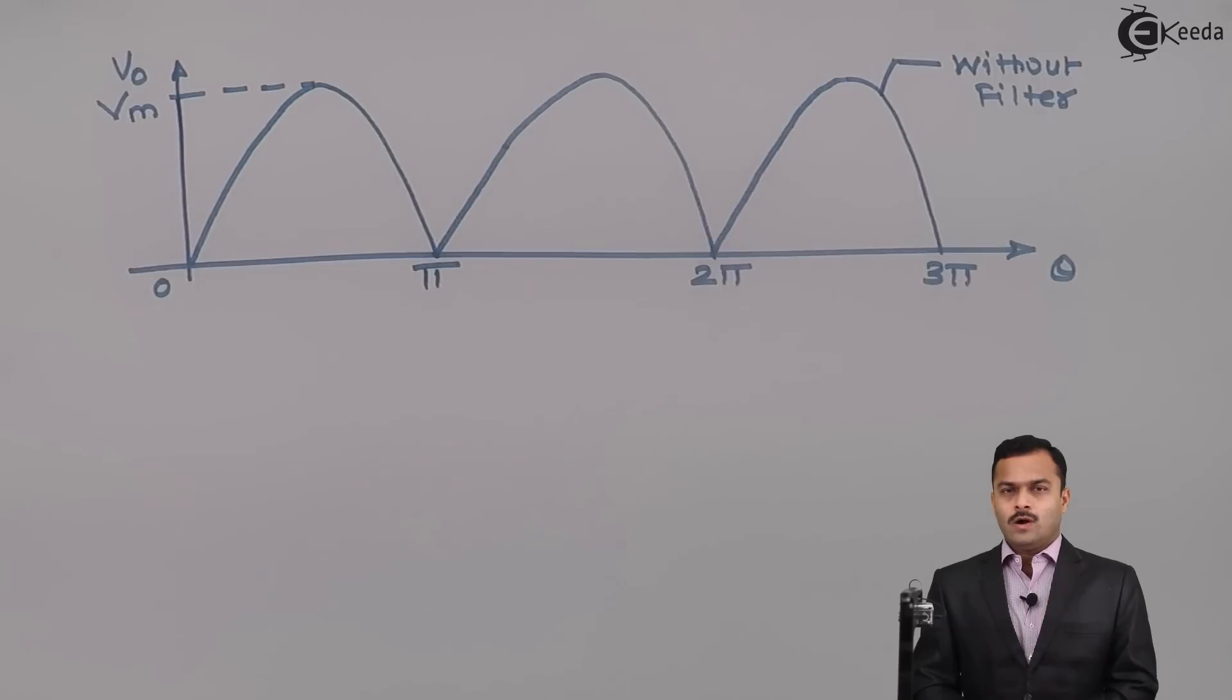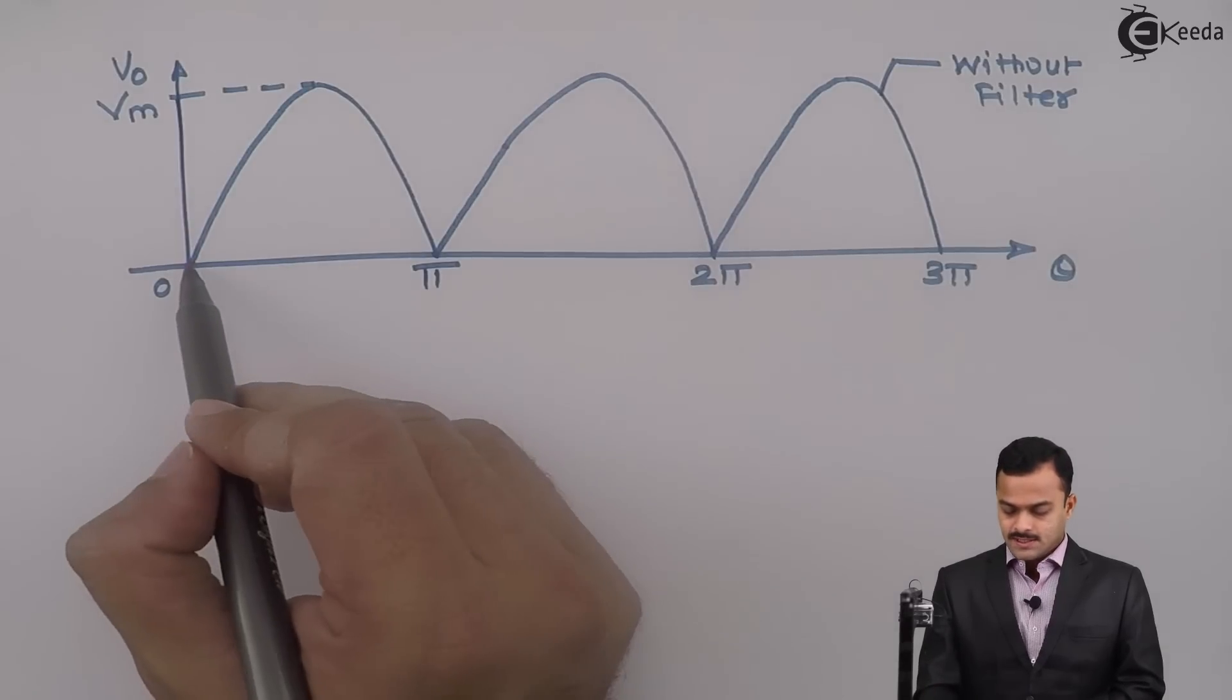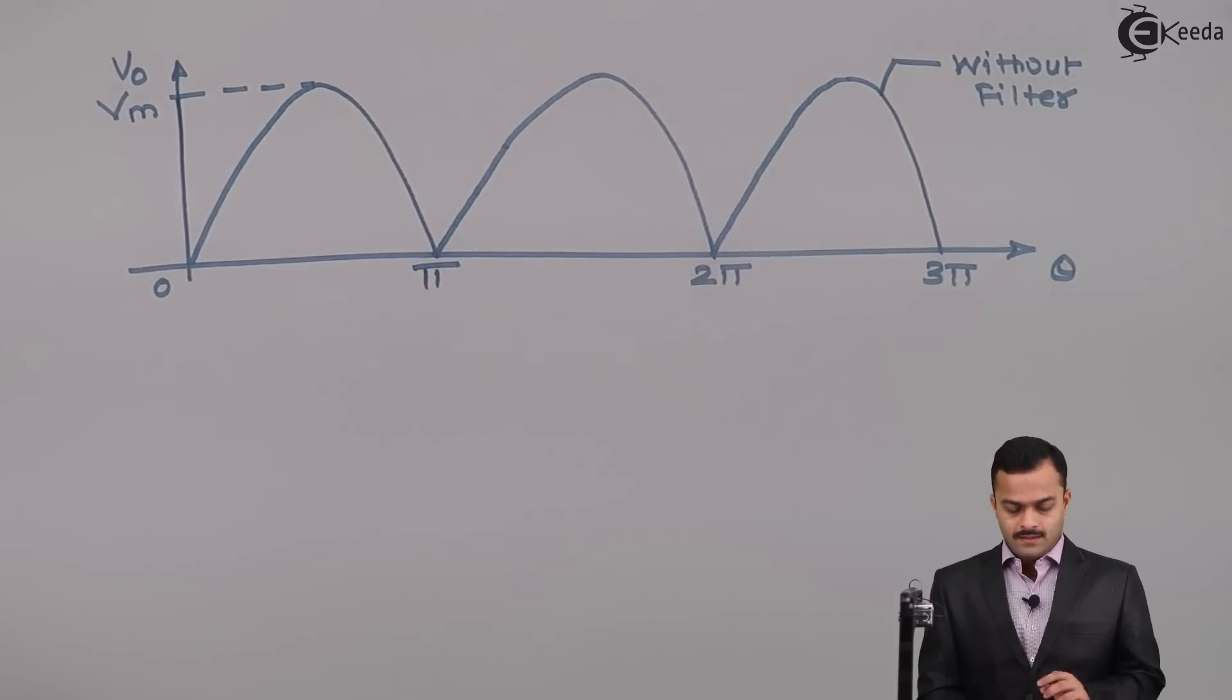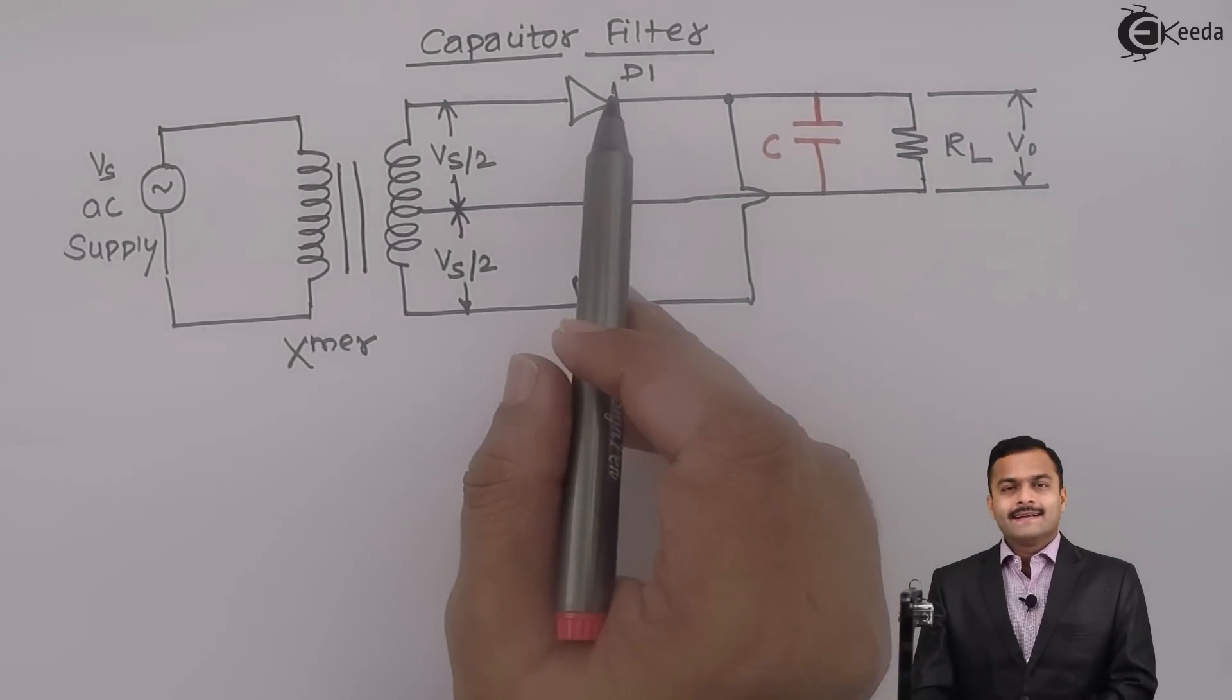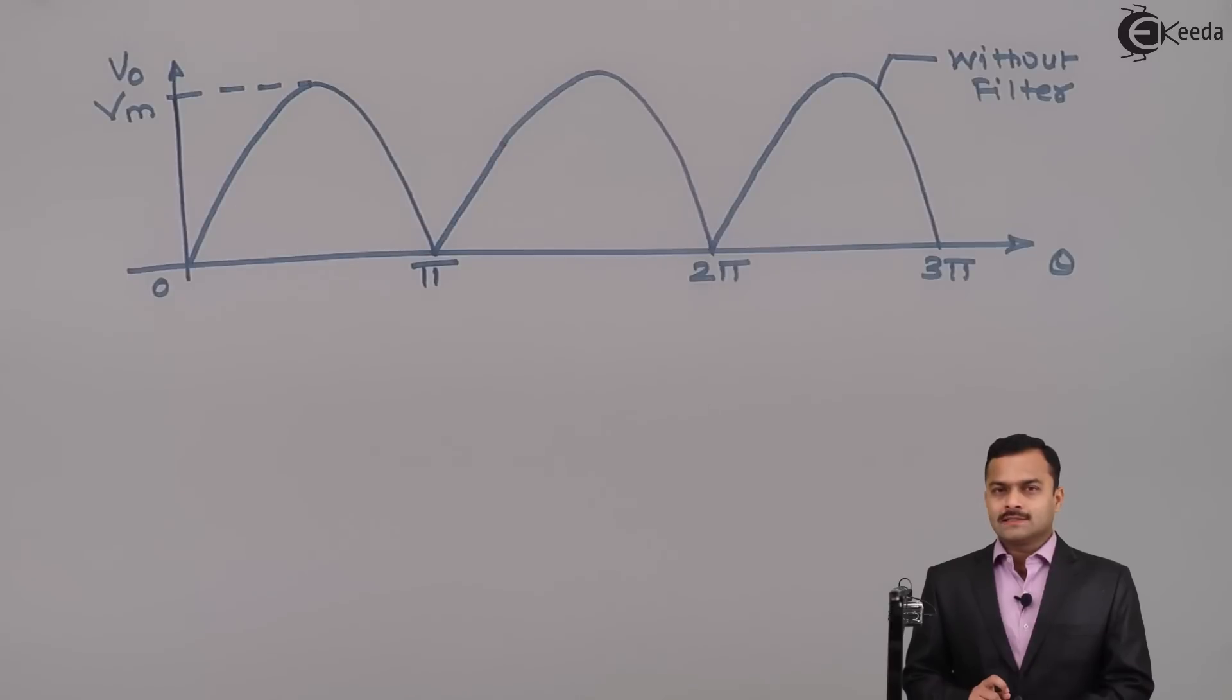Now let's see what exactly happens when you connect a filter. Let's consider this part of the waveform first. What does that indicate when diode D1 operates? During positive half cycle, diode D1 forward bias, D2 reverse bias. Hence the resultant circuit will be like this.